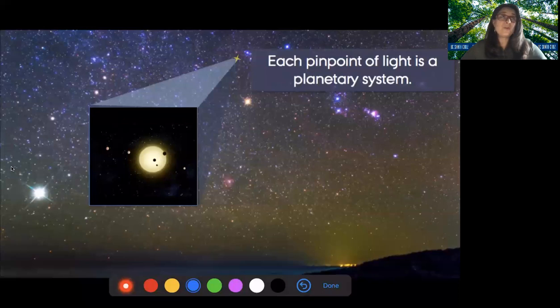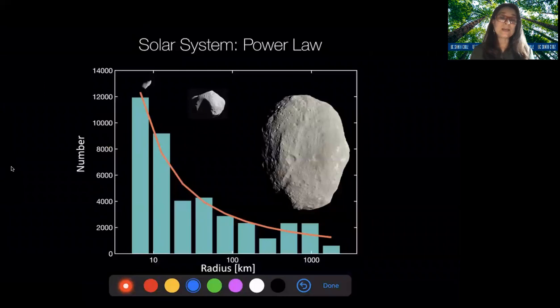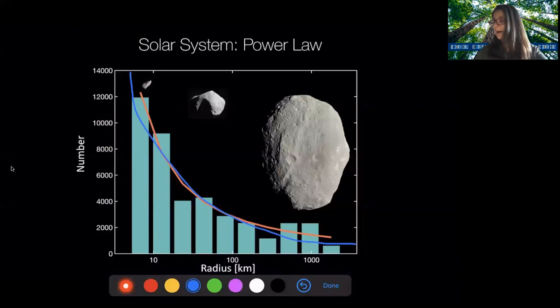For example, in the solar system, if we were to take all of the radii or sizes of objects in the solar system and create a distribution, we would find this beautiful power law distribution as you go from asteroids the size of Vesta that are something like 1,000 kilometers in size, all the way down to objects like Gaspra, which are more like 1 kilometer in size, you see this very nice power law distribution.